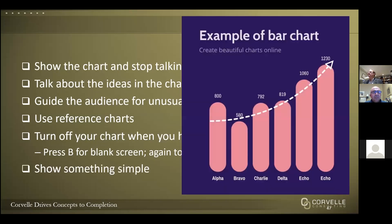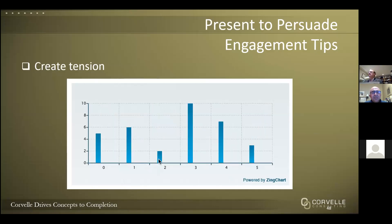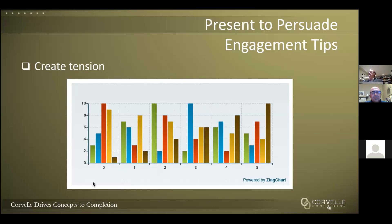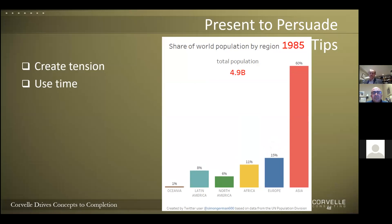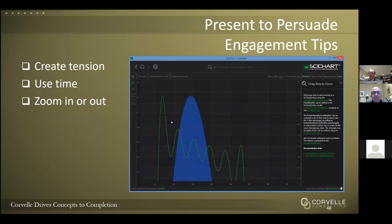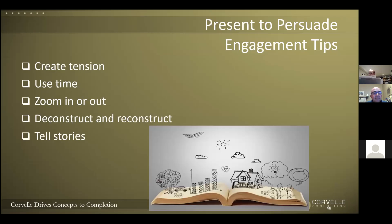Show something simple — don't show something complicated that overwhelms your audience. To create tension and improve engagement, introduce animation and motion wherever possible. Use time-based visualizations that move forward and change as they go. Zoom in and zoom out to help people understand the context of your data. Deconstruct and reconstruct — drill down into the data. Above all, tell a story around the data, as that will be very engaging for your audience.